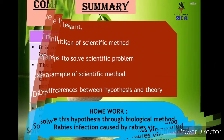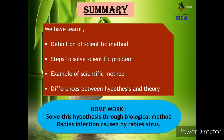All the topics of this lecture have been completed. In this lecture we learned about: the definition of scientific method, steps to solve scientific problems, an example of scientific method, and differences between hypothesis and theory. Now for homework: solve this hypothesis through biological method — rabies infection caused by rabies virus — explain it using the biological method steps accordingly۔